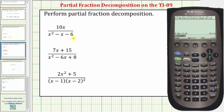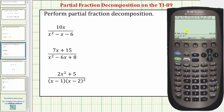Now we can perform the partial fraction decomposition. So we'll press F2, then expand is the third option — you can either arrow down to number three and press enter, or just press three. Looking at the first fraction, we want to perform partial fraction decomposition on 10x divided by the quantity x squared minus x minus six. We do need the numerator and denominator in parentheses, so we'll have open parenthesis 10x, close parenthesis, divided by, open parenthesis x raised to the power of two, minus x minus six, close parenthesis for the denominator, another close parenthesis for the expand function, and then enter.